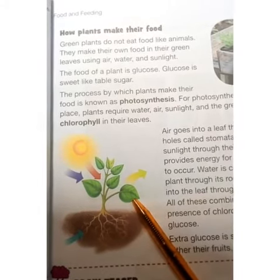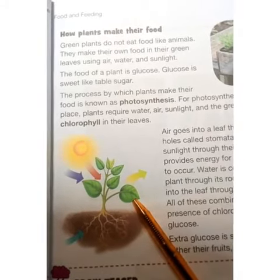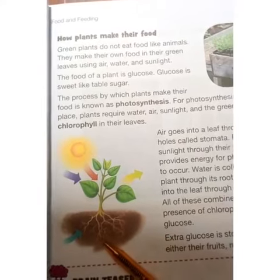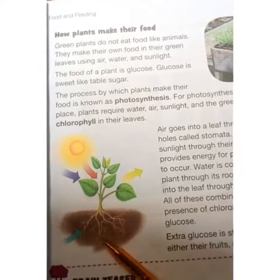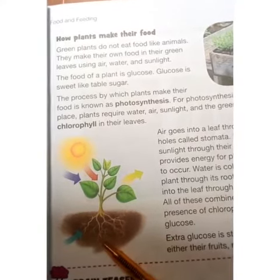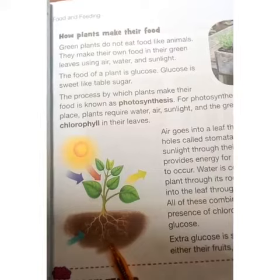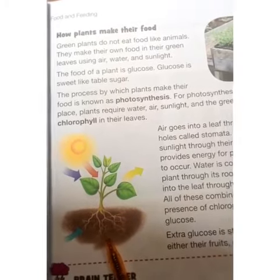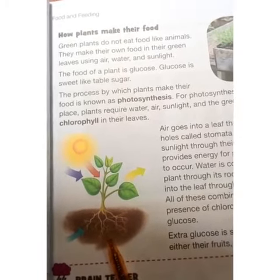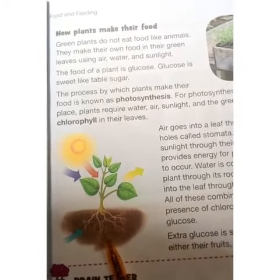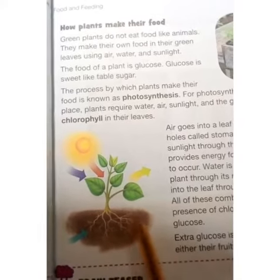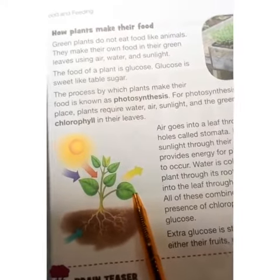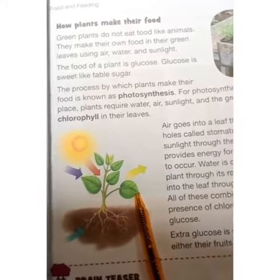Water is collected by the plant through its roots. Roots کے ذریعے سے پانی جذب کیا جاتا ہے اور پتوں تک leaf veins کے ذریعے آتا ہے۔ Water comes into the leaves through the leaf veins.